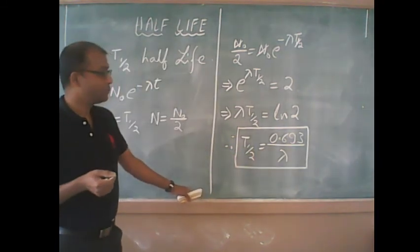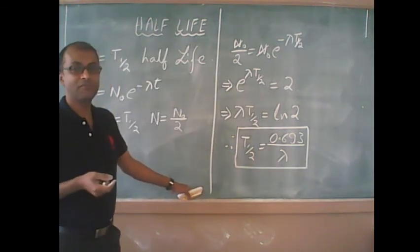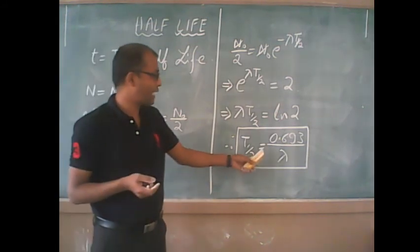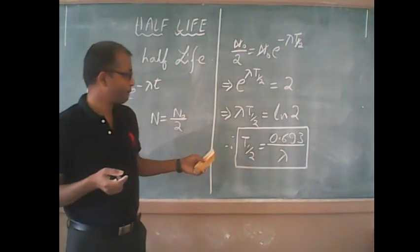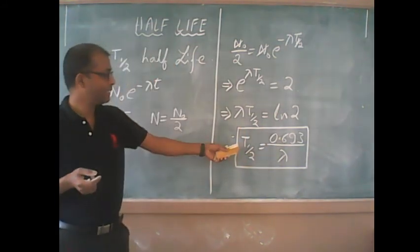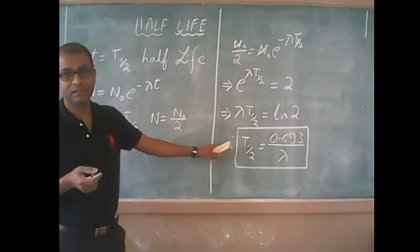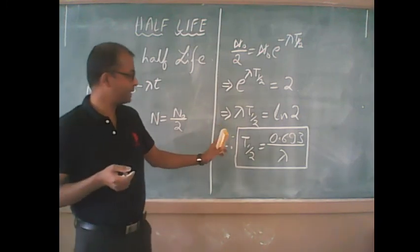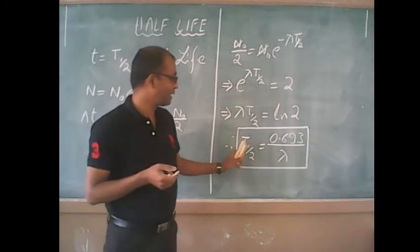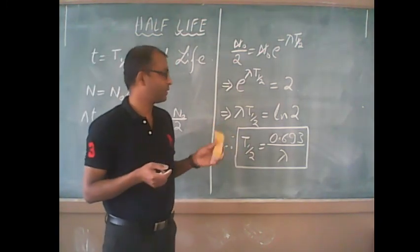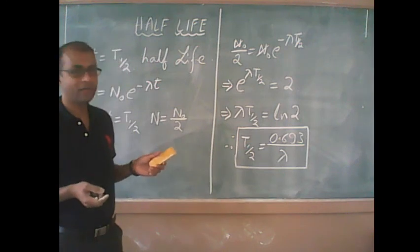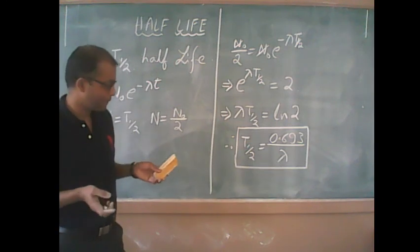This simply means if a radioactive substance has a higher disintegration constant, obviously the rate of disintegration will be more, and hence the half-life of the radioactive substance will be shorter, and vice versa.